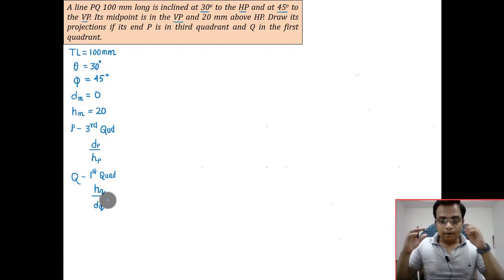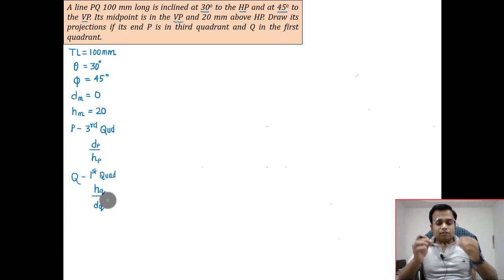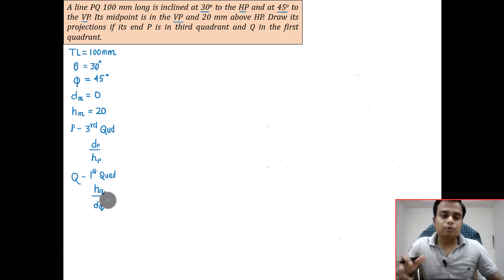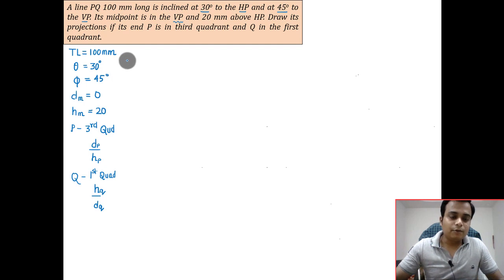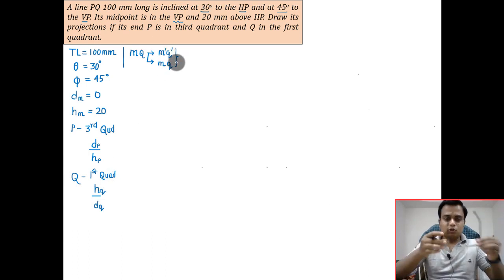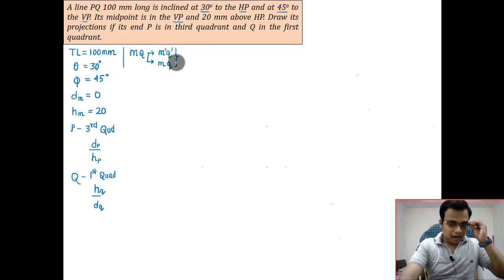As far as this problem is concerned, we can solve it by the half line approach. We can say initially that the line is not PQ but rather is MQ, and we're going to make the front view of this line, m dash q dash, and also make the top view, m q. As point Q is in the first quadrant, we can treat this easily.